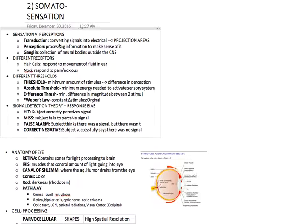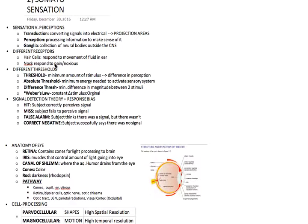Transduction is converting any signals, which may be light, chemical, or whatever, to electrical signals that are passing through action potentials that go through projection areas of the brain. Perception is processing information, making sense of it, and ganglia are a collection of neural bodies outside the central nervous system.